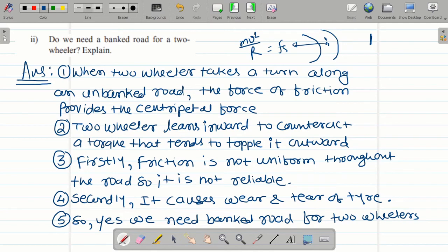This will topple in the outward direction. To oppose that, the two-wheeler tends to lean inward. Toppling means shifting of normal, which is part of rotational mechanics.